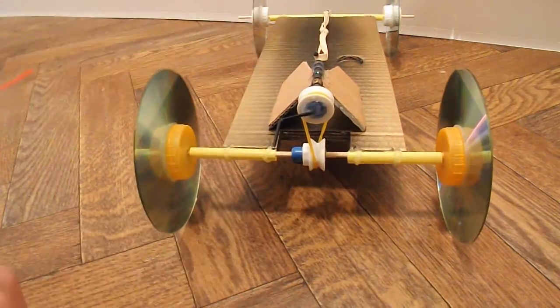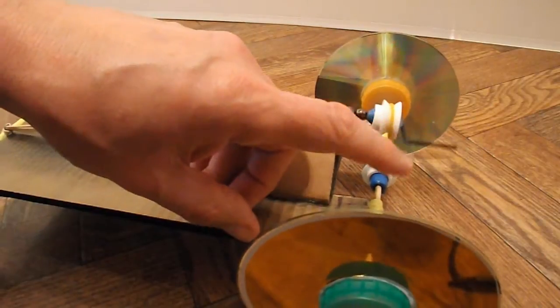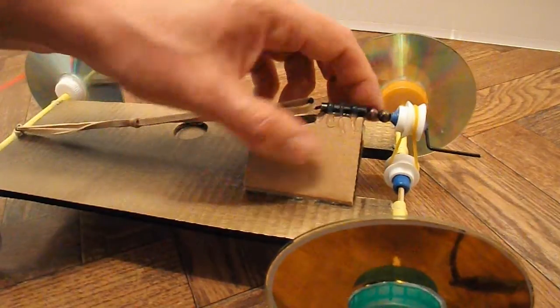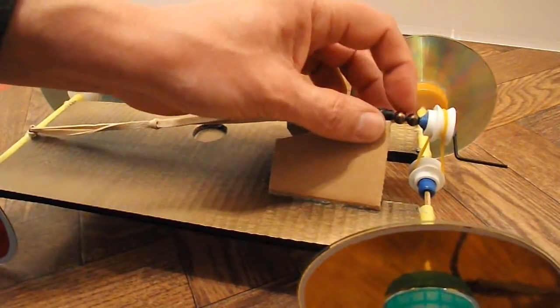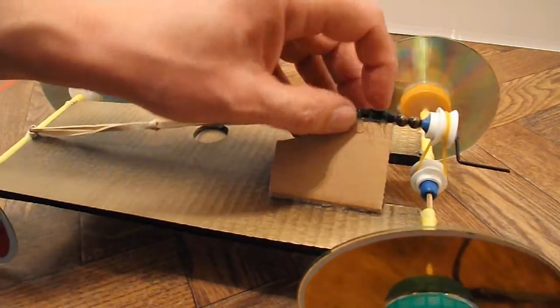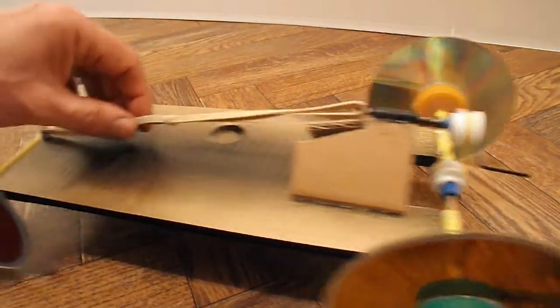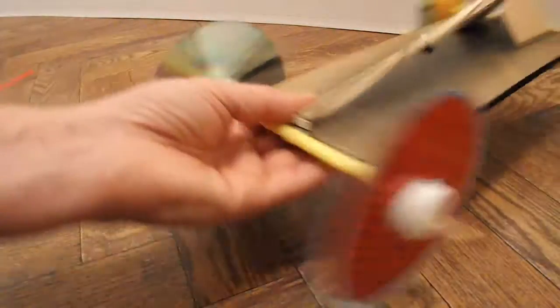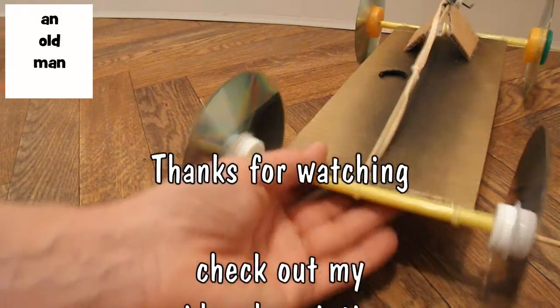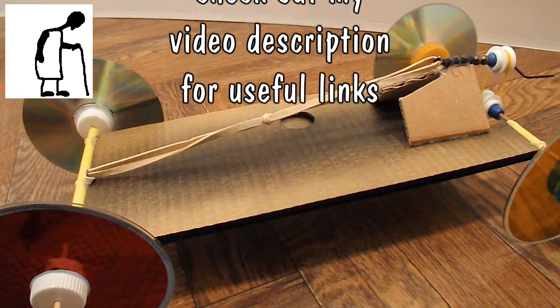This is a bit of bicycle spoke that I've bent. A couple of beads there to give us a friction surface. A bit of pretty thick plastic tubing there. And the rubber bands, which are hooked onto a paper clip at the front there. And it works. Pleased with that.